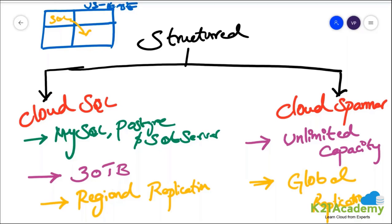So now you have an answer for when to choose Cloud SQL and when to choose Cloud Spanner. If your structured database is less than 30 terabytes in size, go with Cloud SQL. If replication within a region is sufficient for you, you can go with Cloud SQL. If the capacity of your database can exceed 30 terabytes, or if you need your structured database to be globally replicated, go for Cloud Spanner.